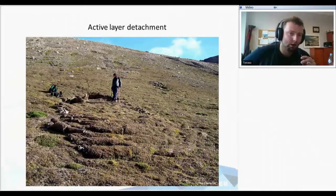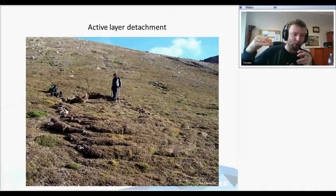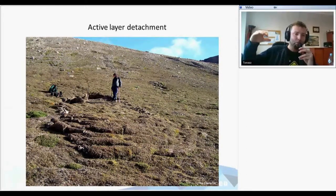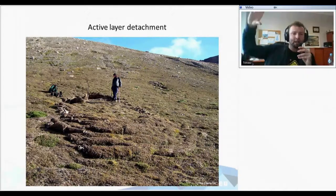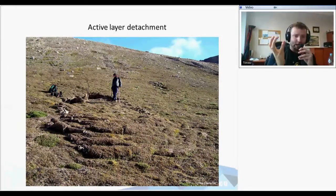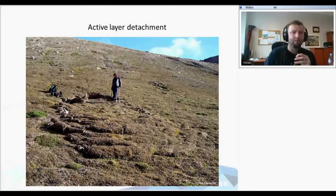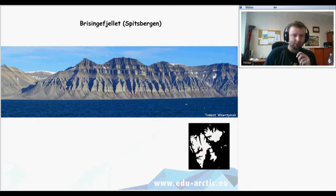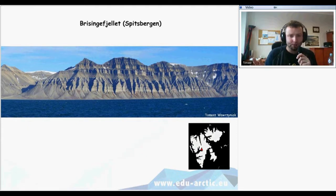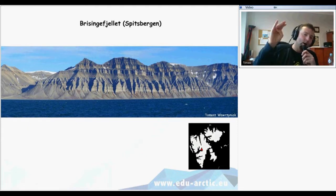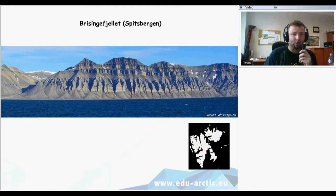Another example of soil creeping when it thaws is active layer detachment. On a slope, when the active layer thaws it can move downward with gravity — such an example can be seen here, where the ground detached from itself and went down. On different mountains, for example in Spitsbergen, you can see different processes on the slopes and also the flattening of the upper parts of the mountains.